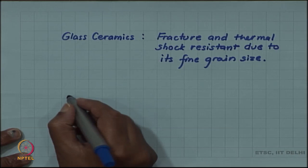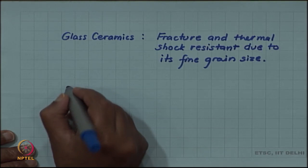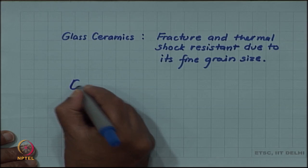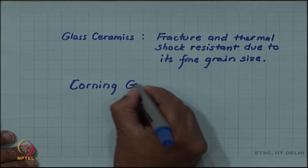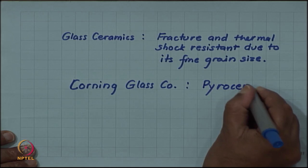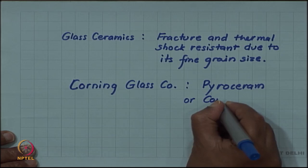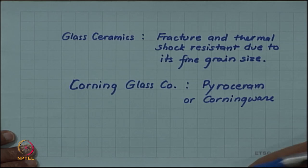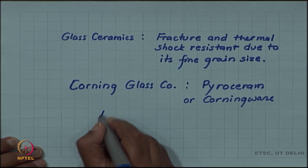One of the commercial companies which first developed this kind of glass ceramics and still is an important producer is the Corning Glass Company, who marketed it in the name of Corningware. The person responsible for this development was Donald Stookey.